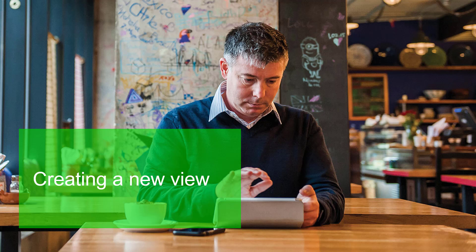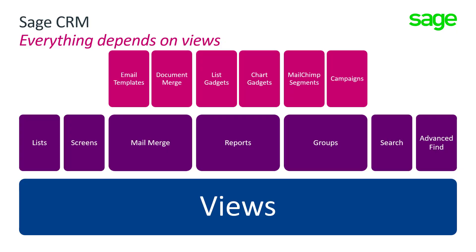Let's look at the idea of creating a brand new view. Inside SageCRM everything depends on views — it doesn't matter what version you're using. The fundamental concept is that interactions with the database when selecting information, aggregating it, and carrying out calculations and derivations, it's a view that interacts with the database. We then talk to that view whether it's for mail merge, creating a group, or ultimately creating something like a list gadget within the interface.